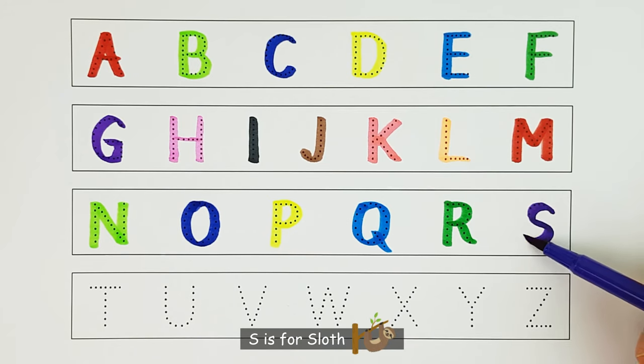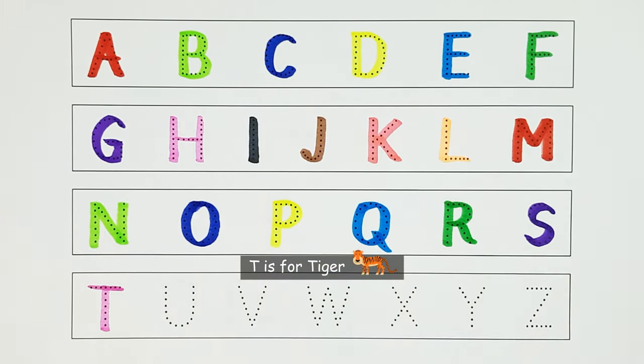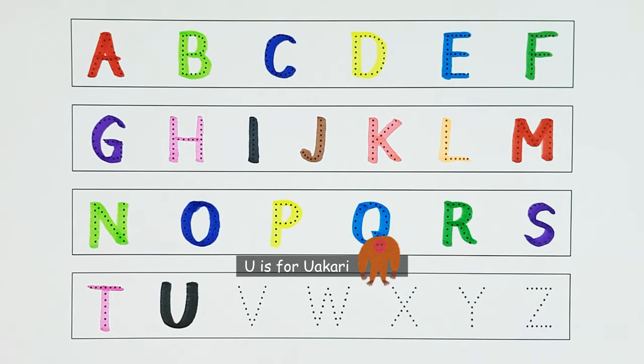S. S is for sloth. S. T. T is for tiger. T. U. U is for uakari. U.